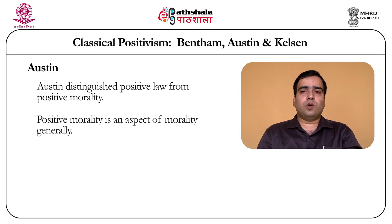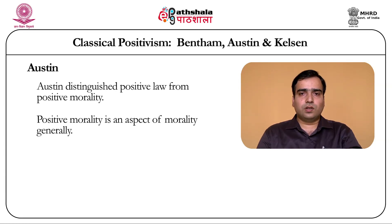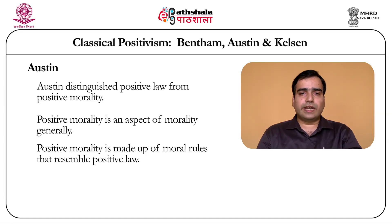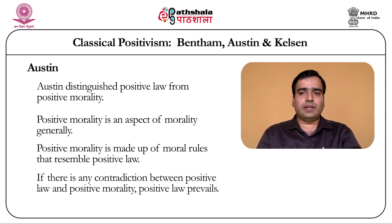According to Austin, positive morality is an aspect of morality generally. It is moral to be kind to fellow beings and to practice temperance, to give charity and generally to be virtuous — these are moral values, but not moral rules. In Austin's legal system, positive morality is made up of moral rules that resemble positive law. Many rules of positive morality coexist with the rules of positive law — rules against murder, rape, robbery, theft and cheating are just a few examples. If there is any contradiction between positive law and positive morality, according to Austin, the positive law prevails.